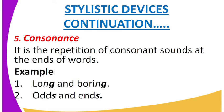Then we have consonance. It is the repetition of consonant sounds at the end of words. In alliteration we said it is at the beginning, and here in consonance it is at the end. For example: 'long and boring' — at the end of those words are consonants. Another example: 'odds and ends' — the sounds at the end of those words are consonants.